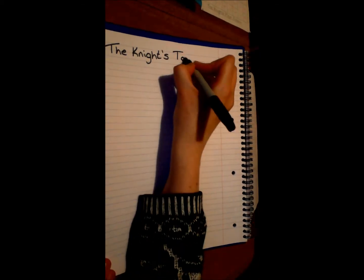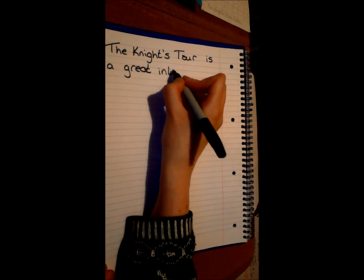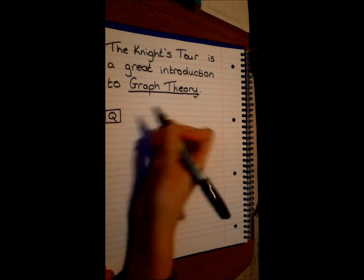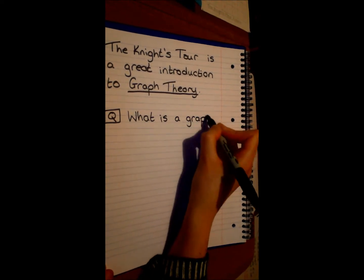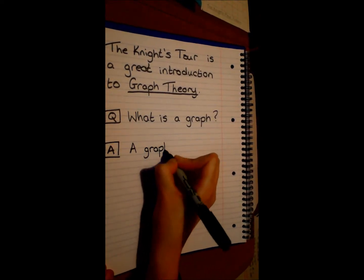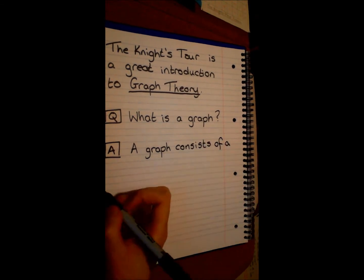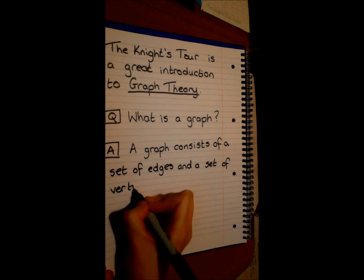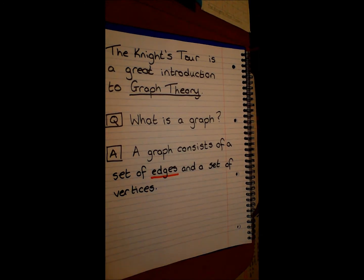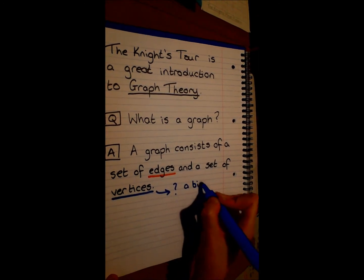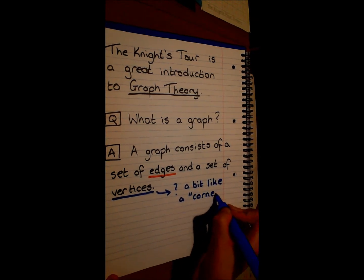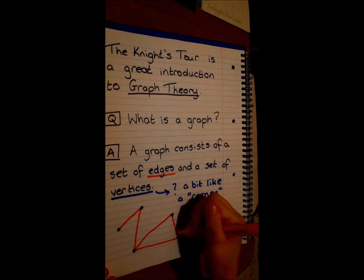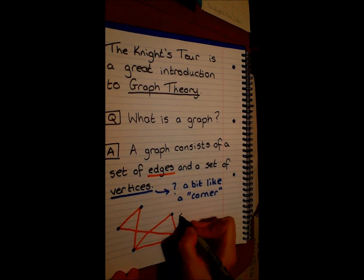The Knight's Tour is a great introduction to graph theory. To begin to understand graph theory we first need to answer the question: what is a graph? A graph consists of a set of edges and a set of vertices. If you're a little confused about what a vertex is, it is like a corner of our graph. So the blue dots make our set of vertices and the red lines are our set of edges.